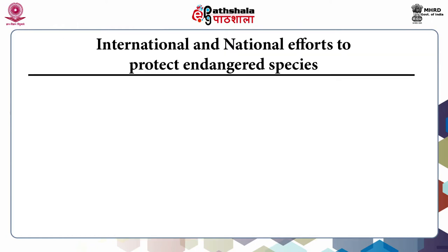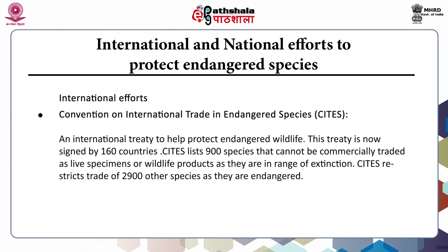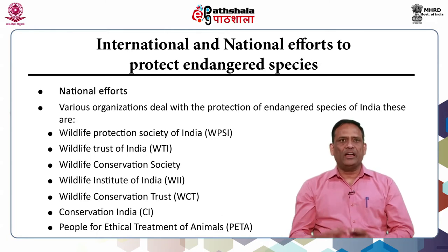Let us look at the international and national efforts to protect endangered species. International efforts include the Convention on International Trade in Endangered Species, known as CITES. CITES is an international treaty to help protect endangered wildlife. This treaty is now signed by 160 countries. CITES lists 900 species that cannot be commercially traded as live specimens or wildlife products, as they are in the range of extinction. CITES also restricts trade of 2,900 other species as they are endangered.